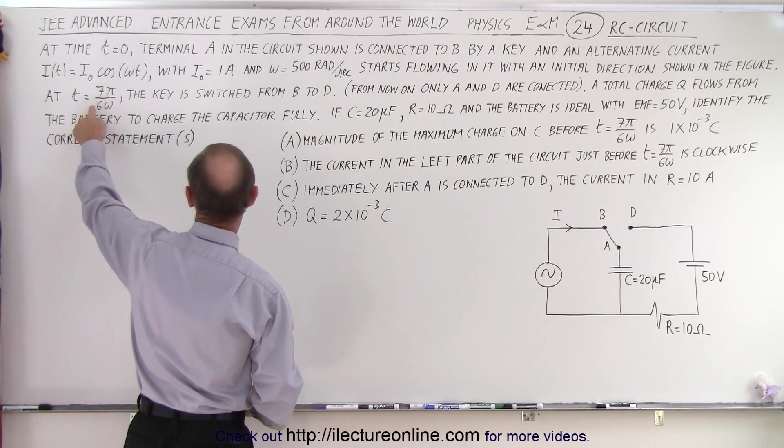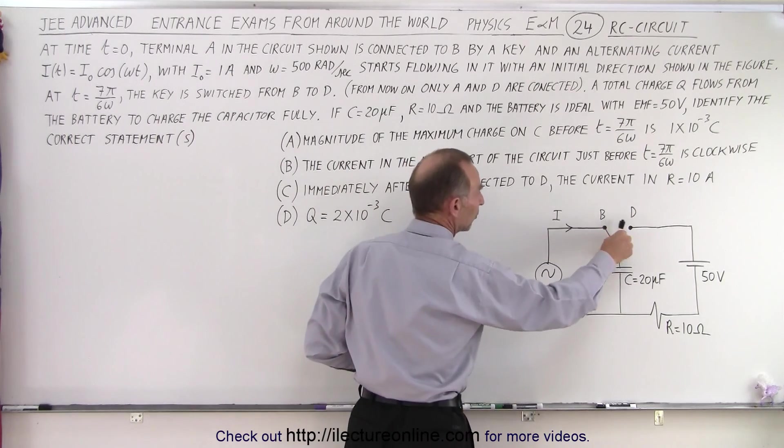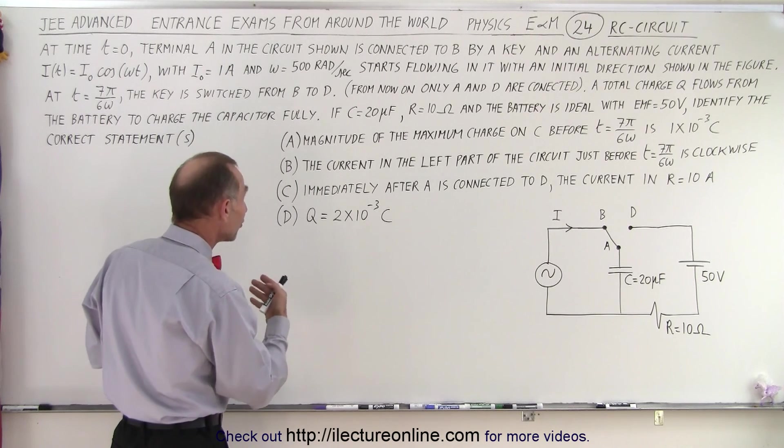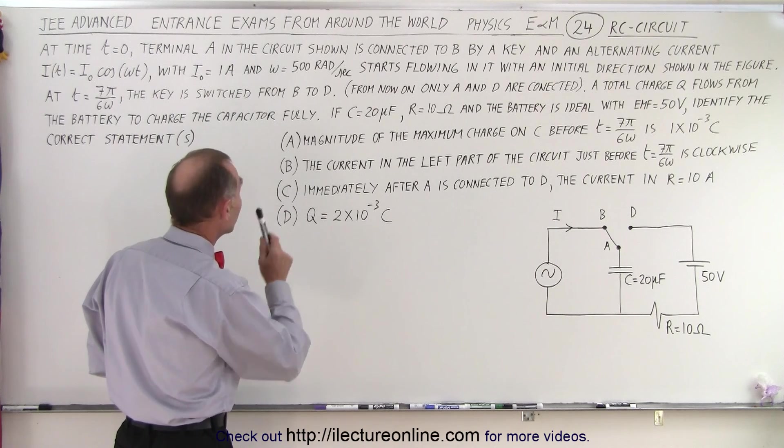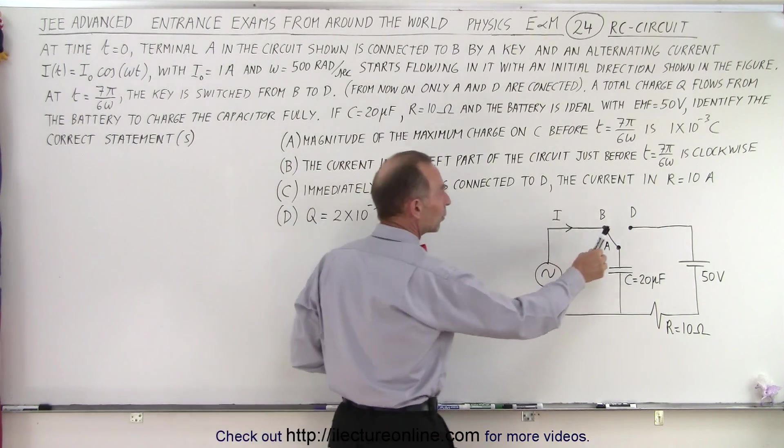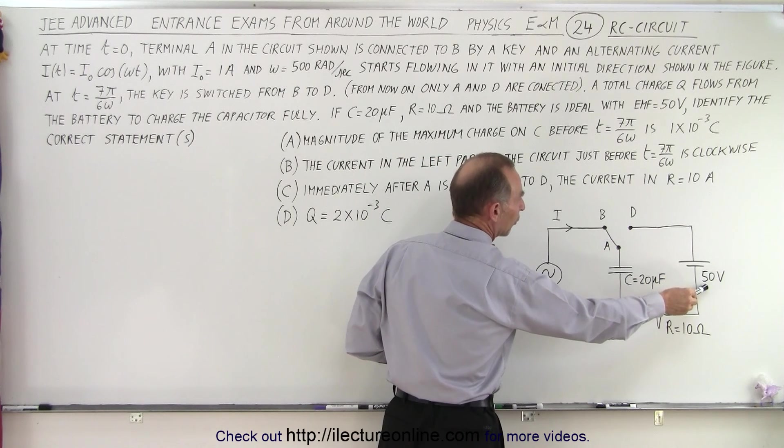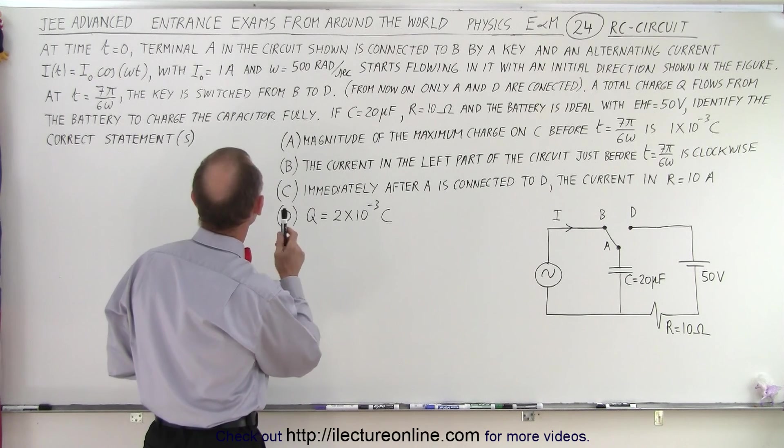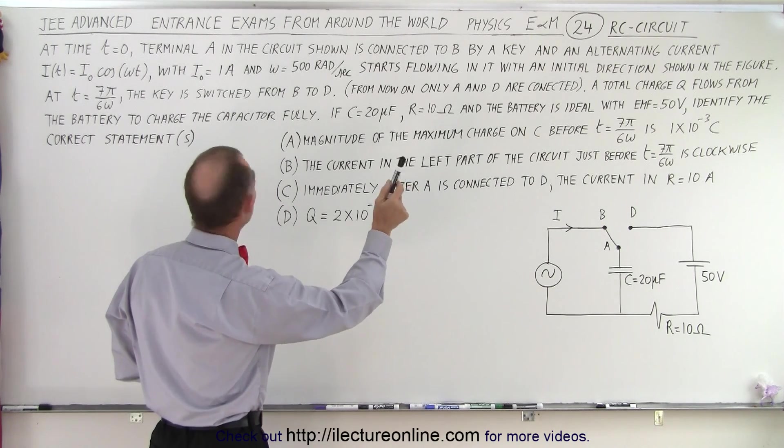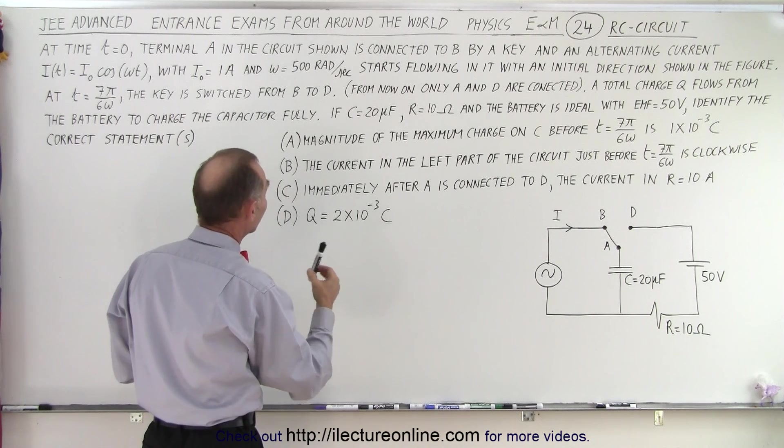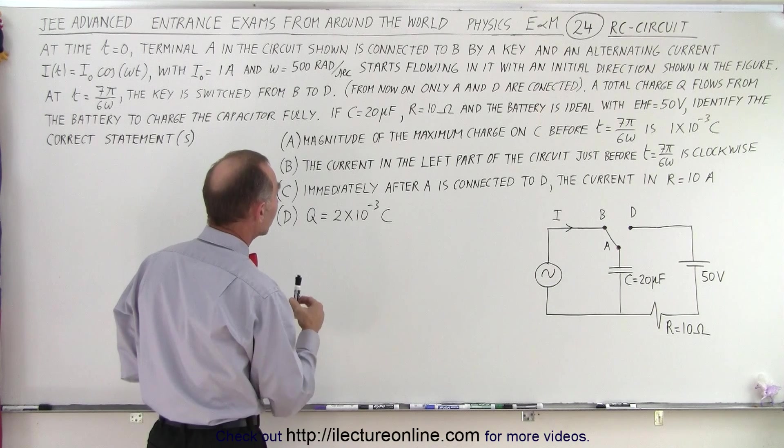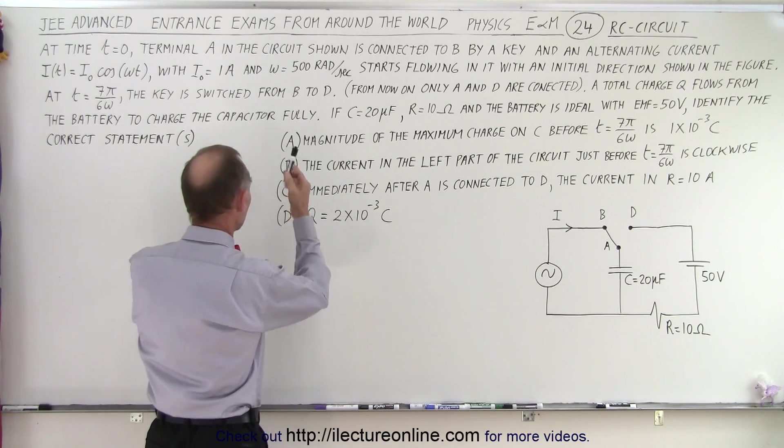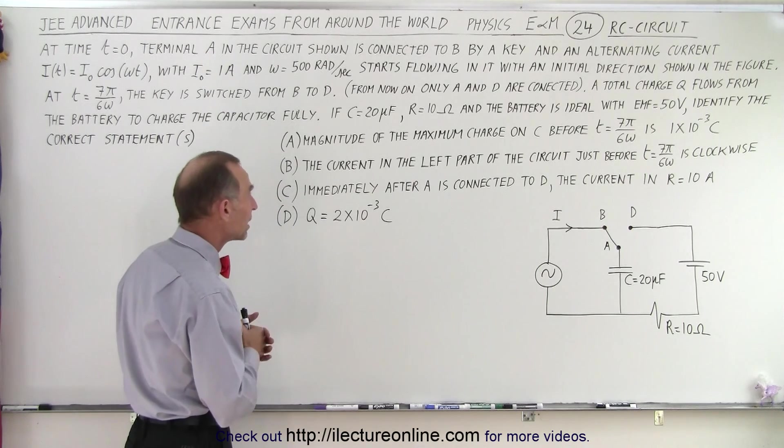When the time reaches seven pi over six omega, the key is switched from B to D. So we go from this position to that position at that moment in time. From now on, only A and D are connected, so we stay in this position with a voltage source of 50 volts, a DC voltage source that eventually will charge the capacitor to its maximum capacitance. A total charge Q flows from the battery to charge the capacitor fully. If C equals 20 microfarads and R equals 10 ohms and the battery is ideal with an EMF of 50 volts, identify the correct statements, and here are the four statements.